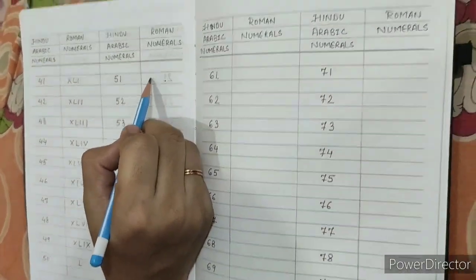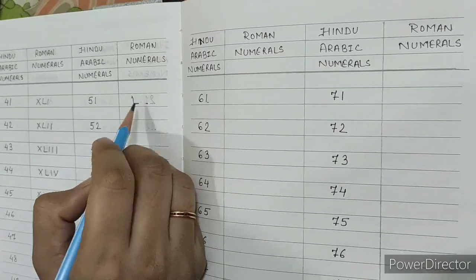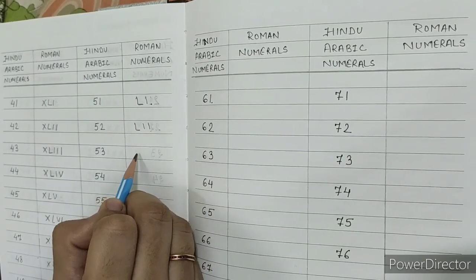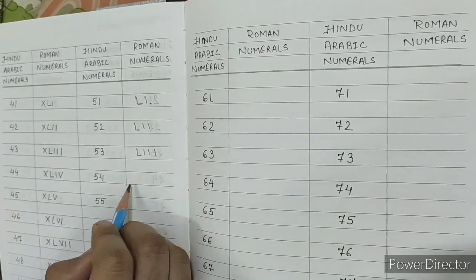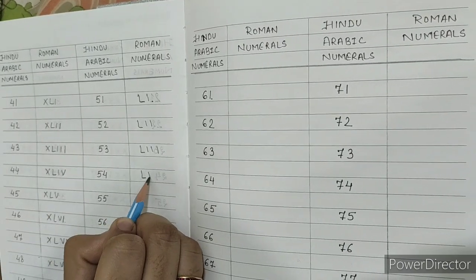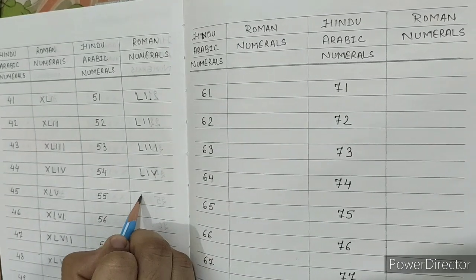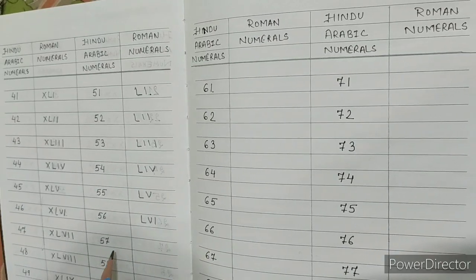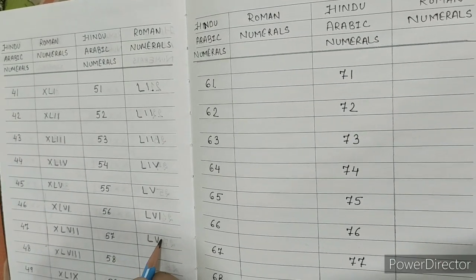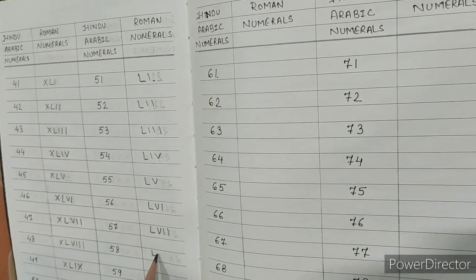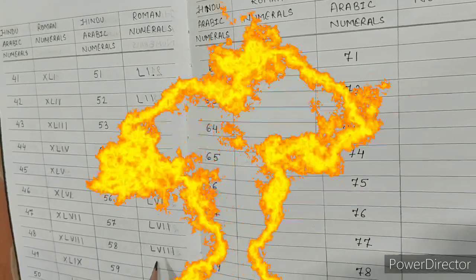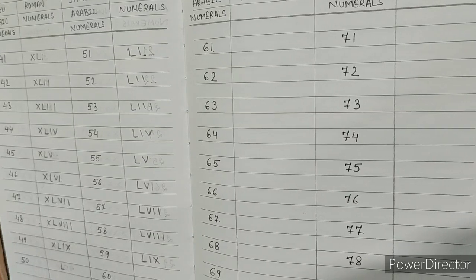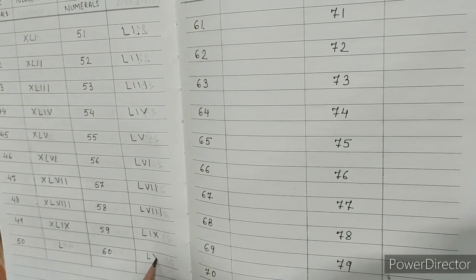Now for 51 to 60. 50 is L, so: 51 is LI, 52 is LII, 53 is LIII, 54 is LIV, 55 is LV, 56 is LVI, 57 is LVII, 58 is LVIII, 59 is LIX, and 60 is LX.